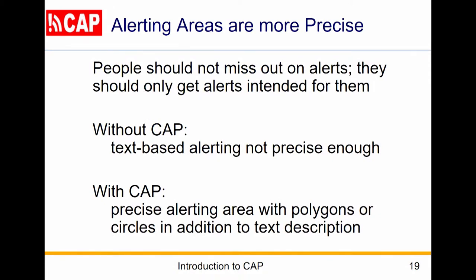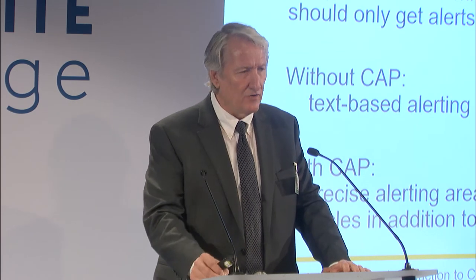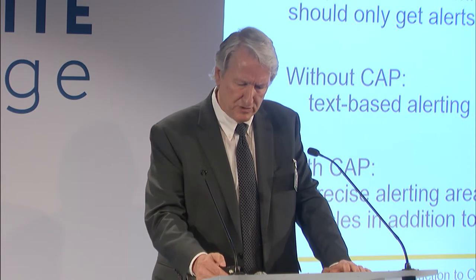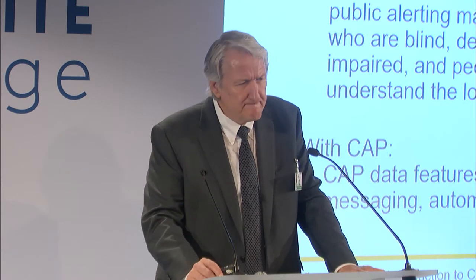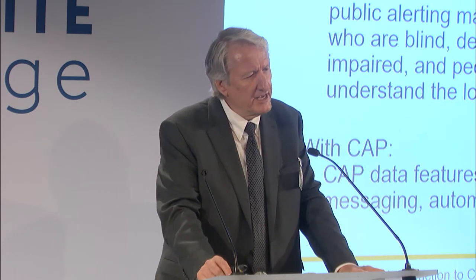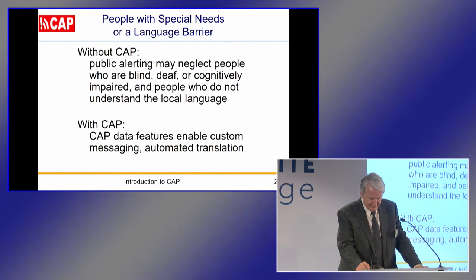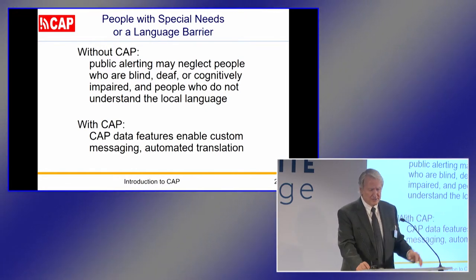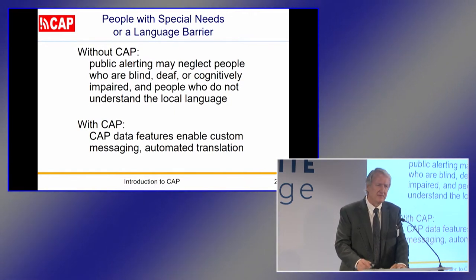Trust. Trust in an alerting system is eroded when people get alerts not intended for them. This happens really often with mass media and with systems based on plain text. With CAP, the alerting area is precisely defined with a polygon or circle, in addition to the textual area description. Many people in harm's way are underserved with current public alerting because they are blind, deaf, cognitively impaired, or do not understand the language — like here in Geneva. These issues are addressed by simply exploiting the data features of CAP with some automated translation.